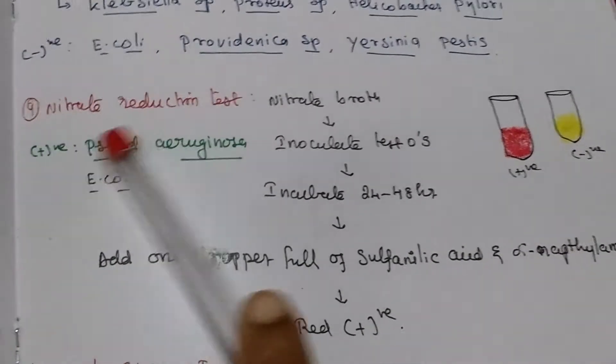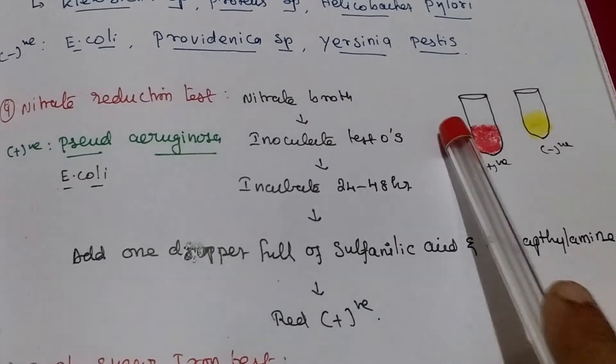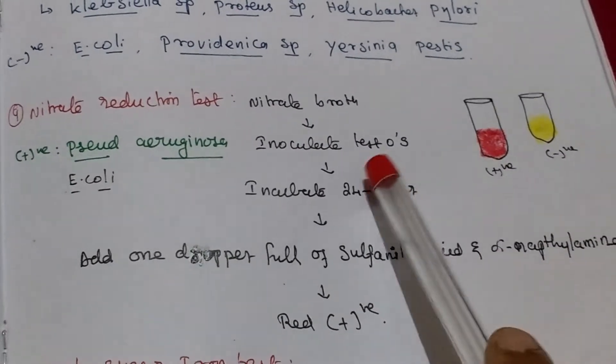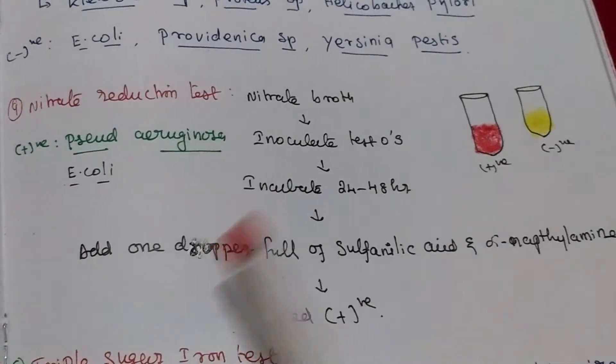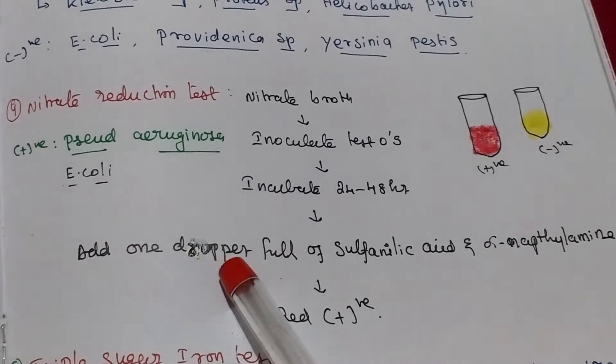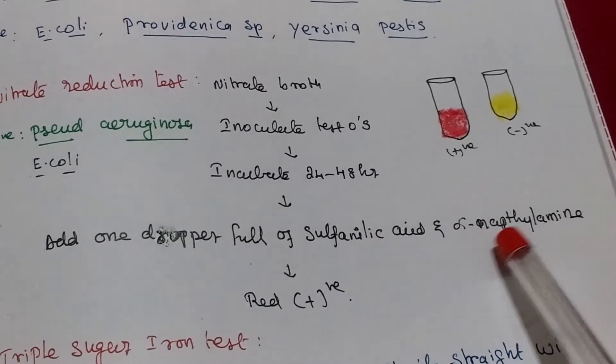Then nitrate reduction test. We will take nitrate broth, inoculated test organism. Incubated 24 to 48 hour. Then we are adding 1 truffle full of sulfanilic acid and alpha-naphthylamine.